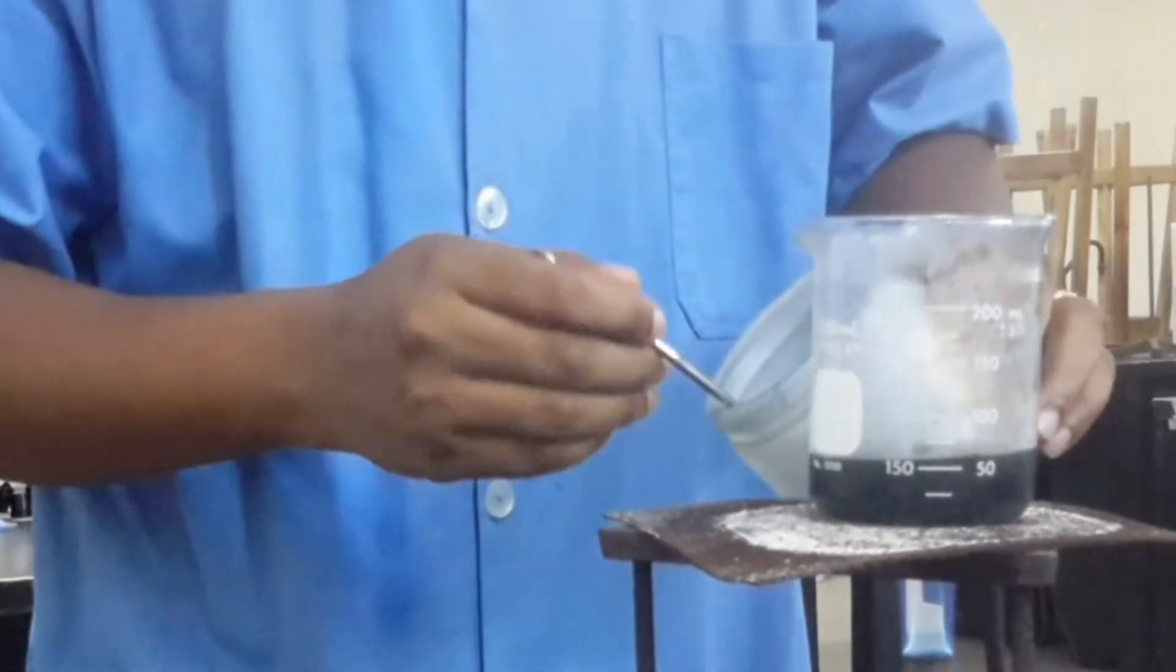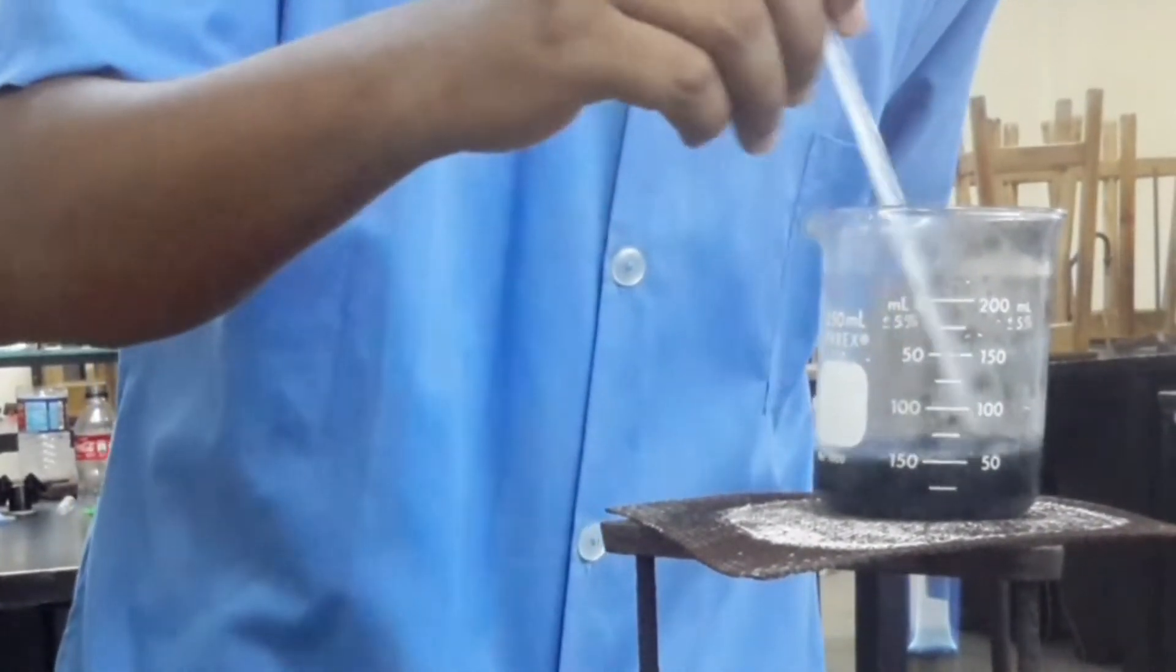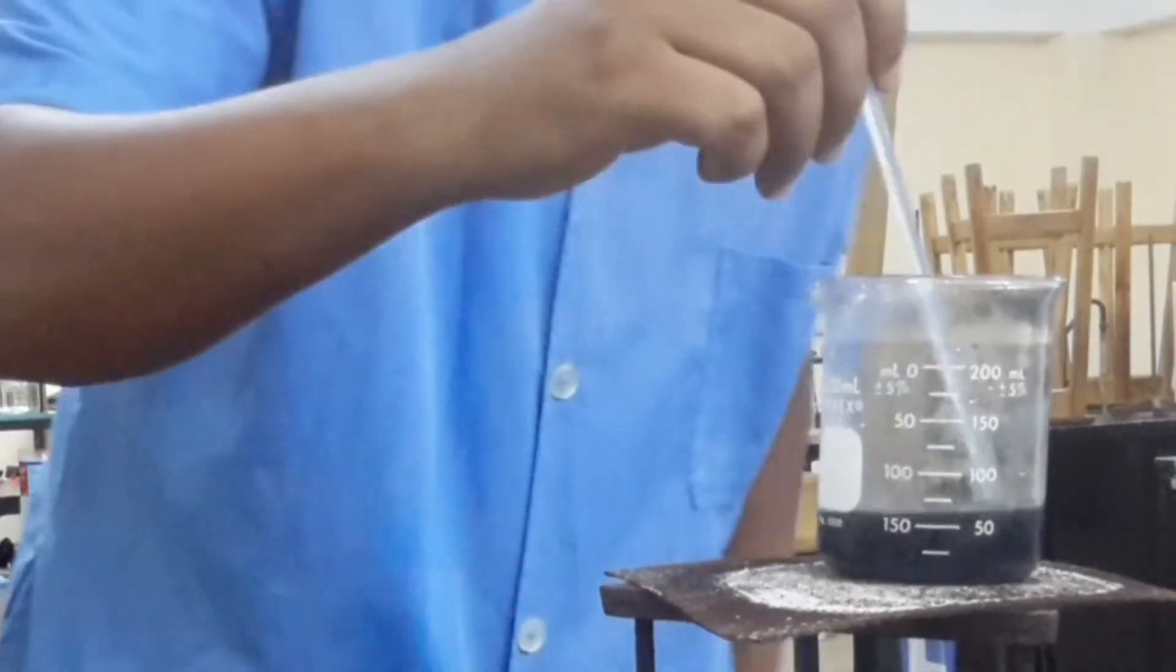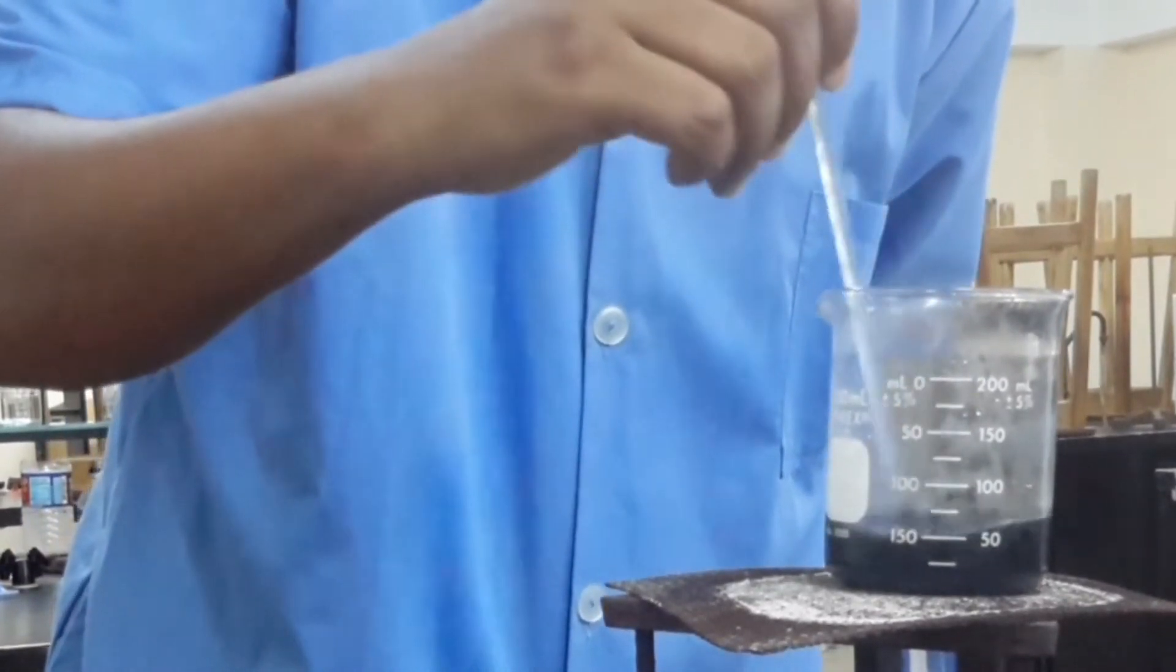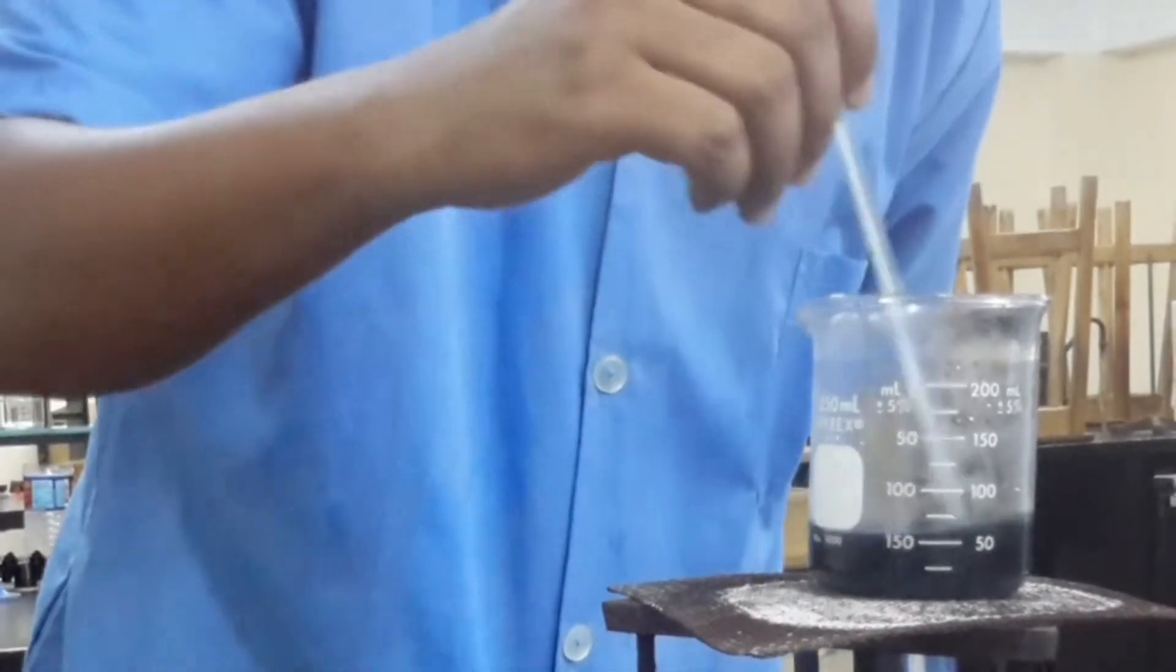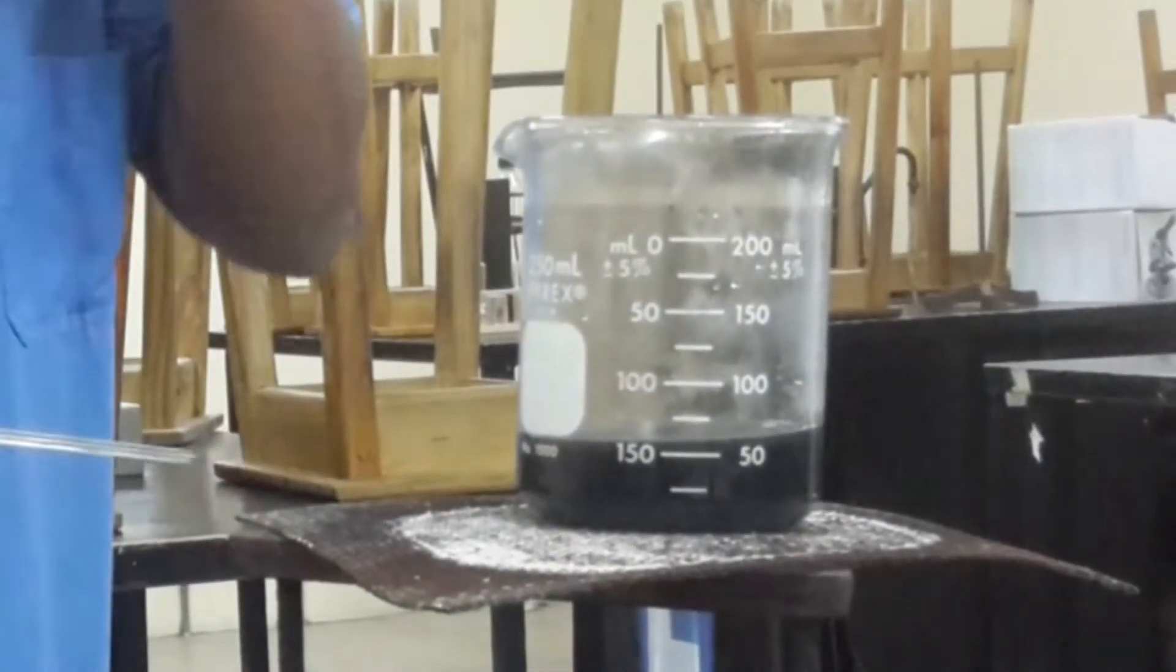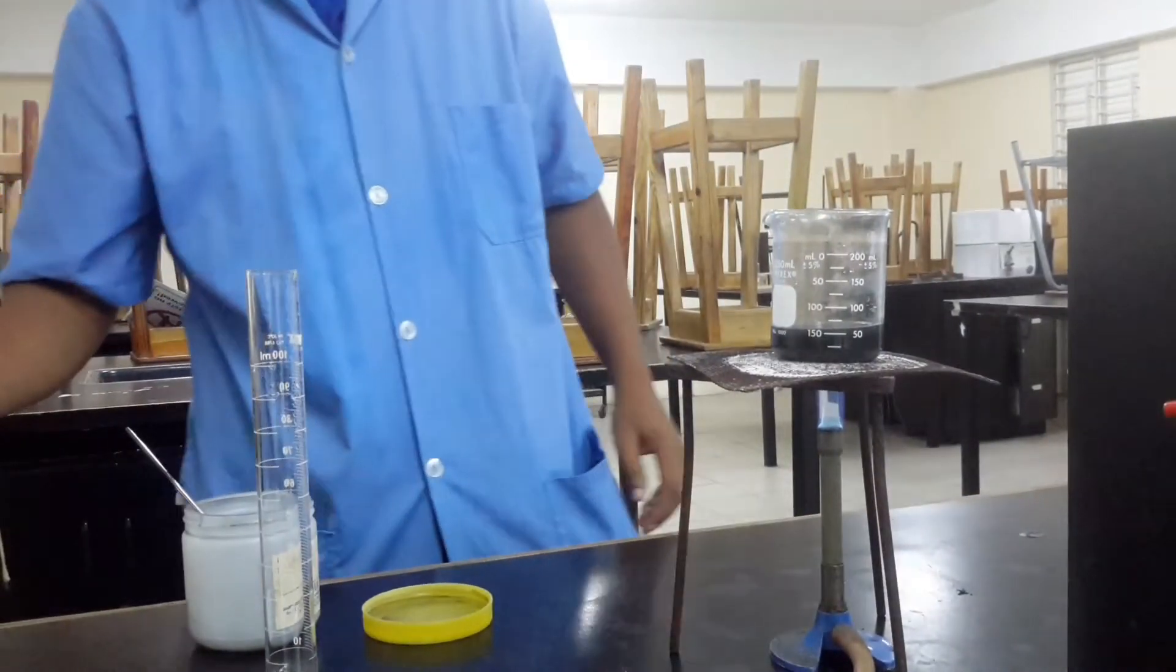That was one, two. And we want to ensure that we have copper oxide settling at the bottom of the container. That's when we know we would have added copper oxide in excess. I believe it is looking like it's settled.